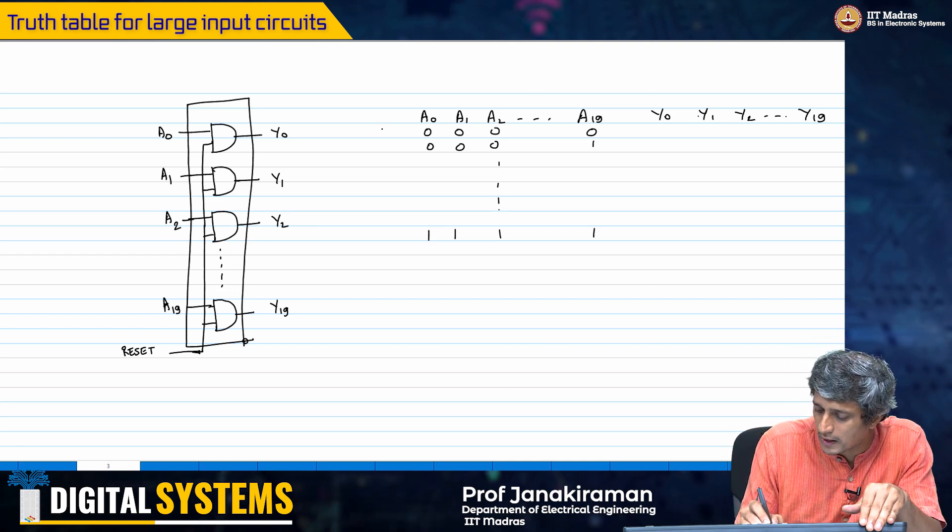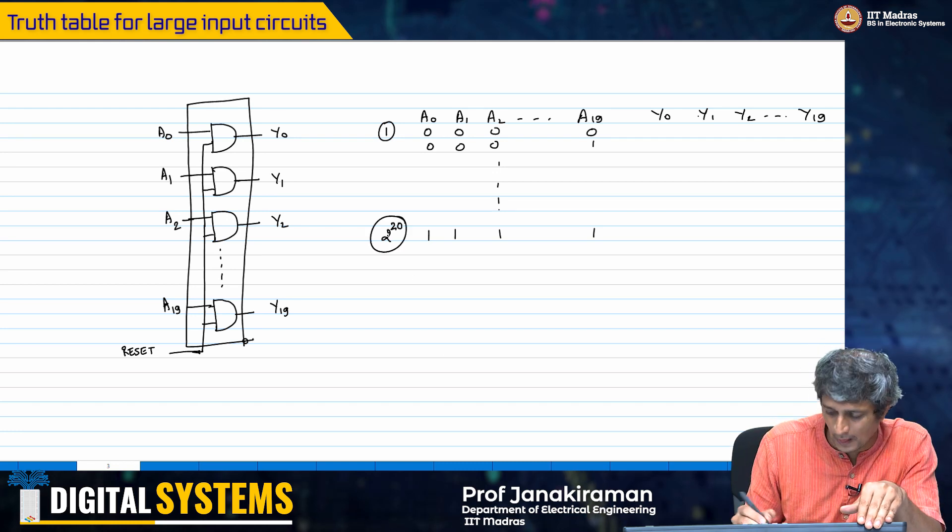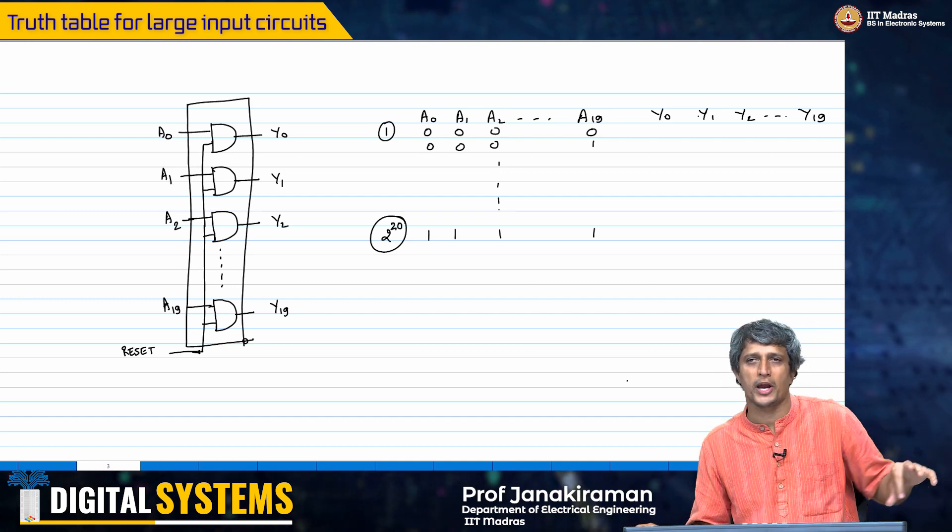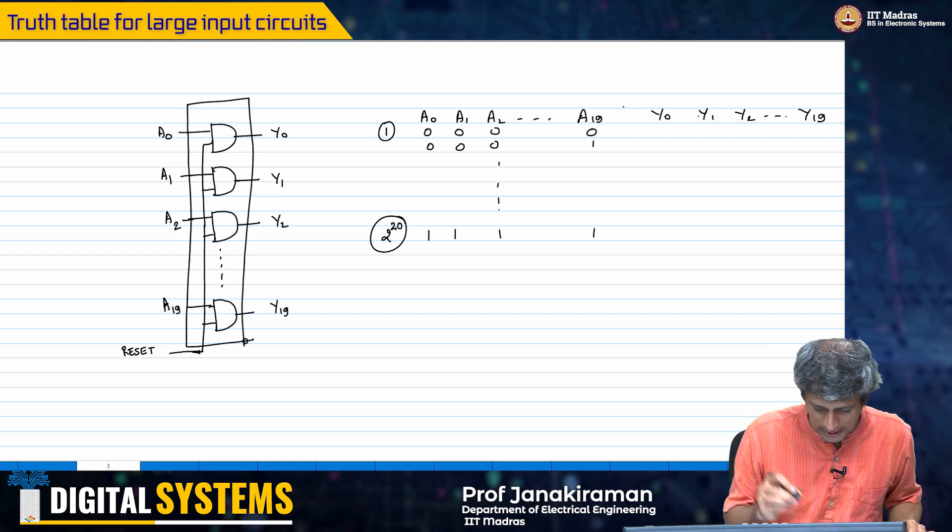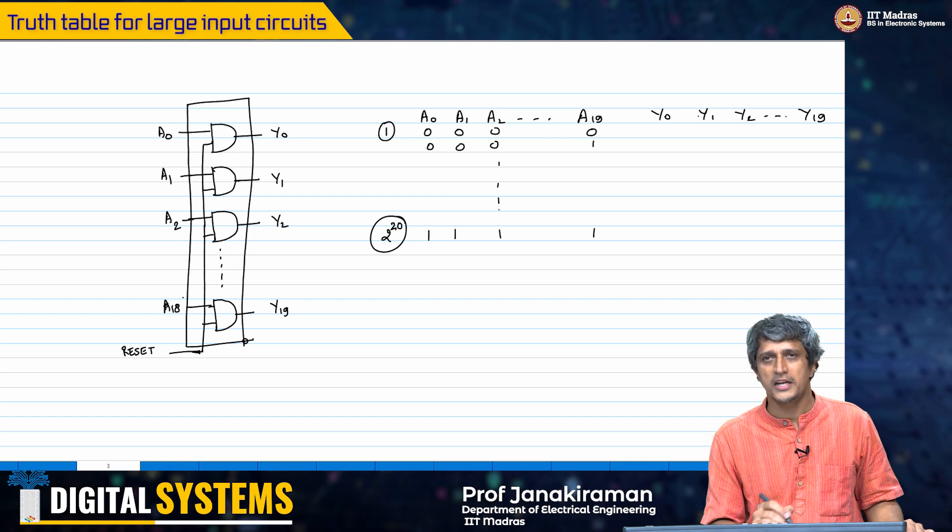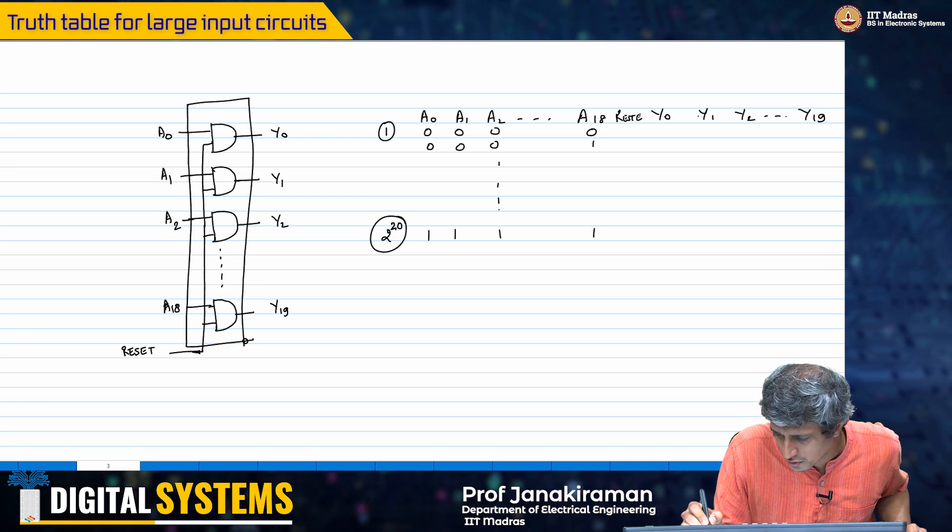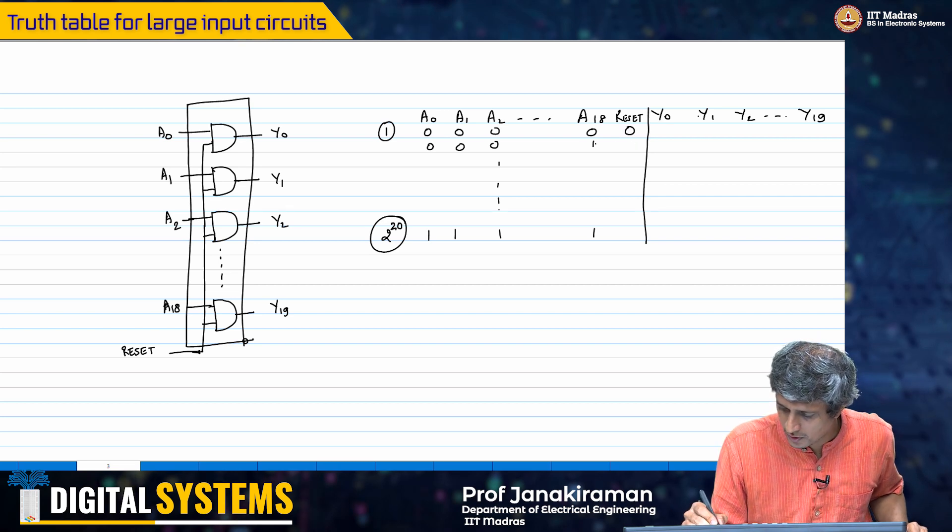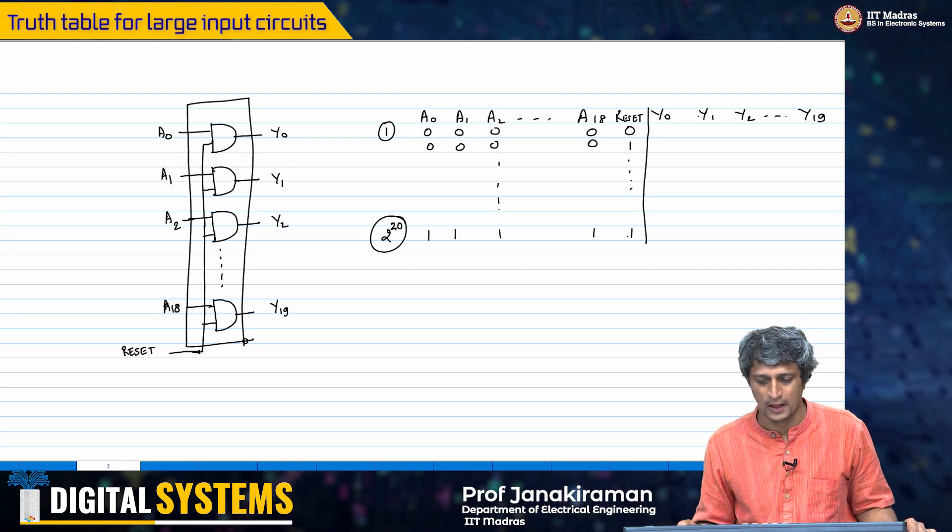This will be combination number 1 and all the way to 2 power 20. The 1 millionth combination is all 1s. Then what will I do? For each of these combinations I will have to propagate the truth table and figure out what the output is. By the way, I forgot I also have reset. I will alter this slightly to keep the other thing same - I will make this as A18. There are 19 inputs plus the 20th input is my reset.